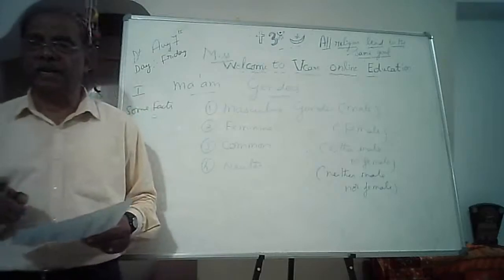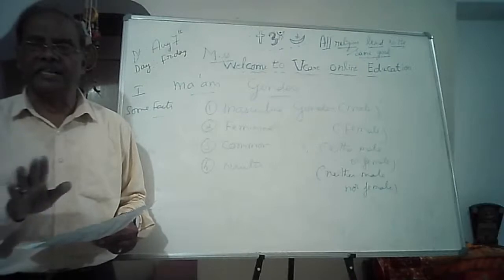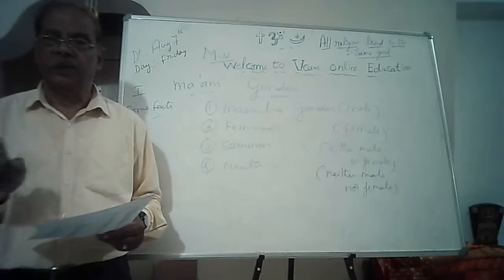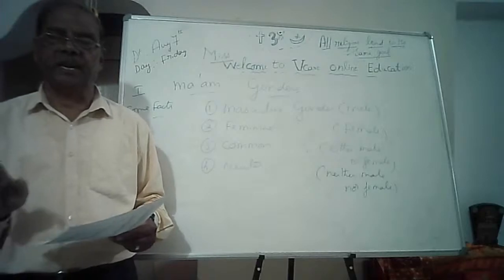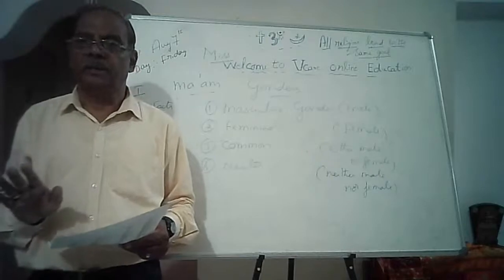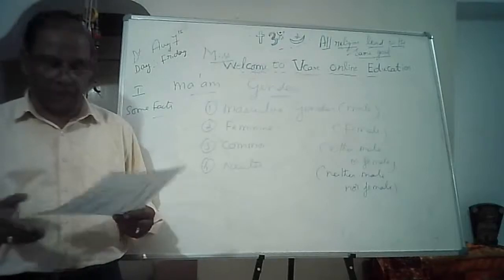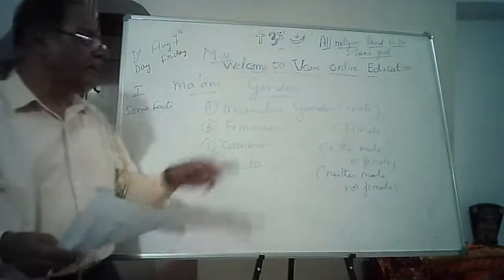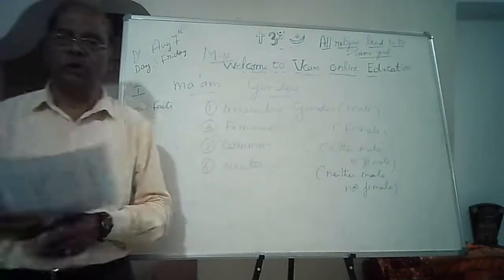One more beautiful fact: honey has no expiry date. We can keep it for one year, two years, five years, fifty years, a hundred years. Unless you add anything to it, it will not get spoiled. Honey is the only food item with no expiry date. This is about genders — masculine and feminine — I told you about human beings and animals.